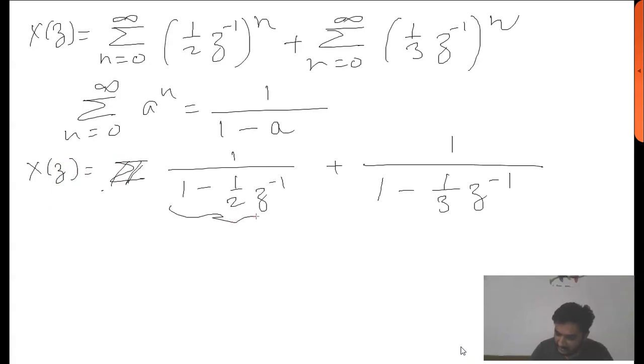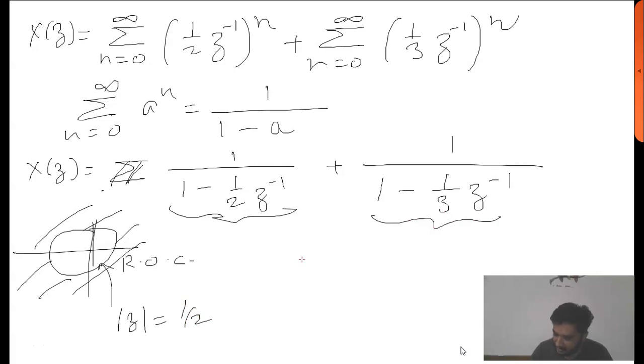The ROC of this term is this one. The radius will be mod of Z equals 1 over 2, whereas for this part, the area outside the circle will be the ROC and the radius of this circle will be 1.